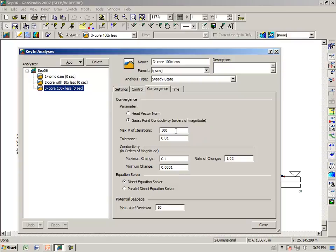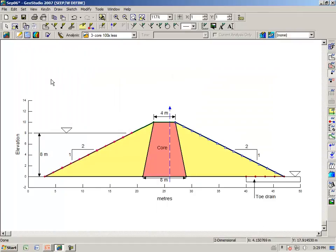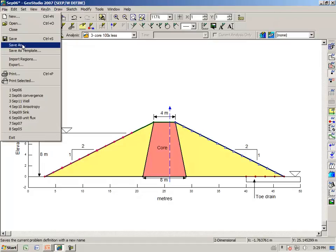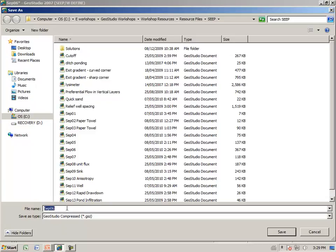What I'm going to do, just to illustrate the point, is make the number of iterations a small number, say 10. And let's save this file under a different name, file, save as, we'll save it as convergence.